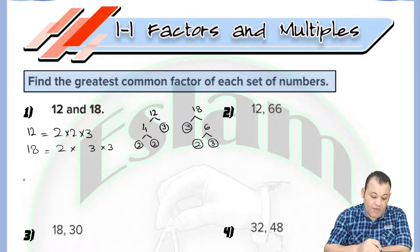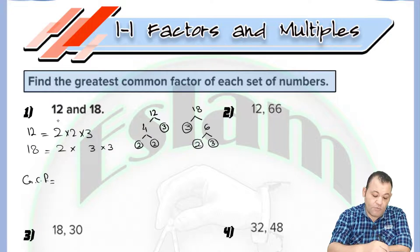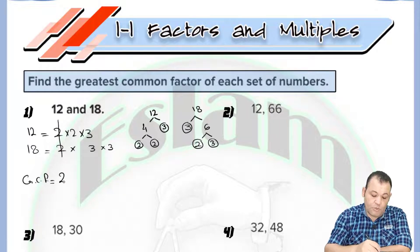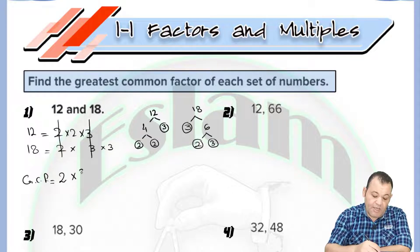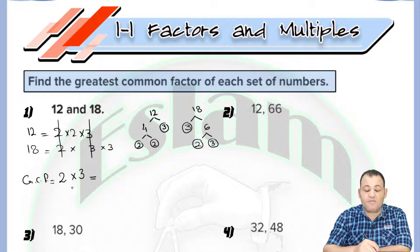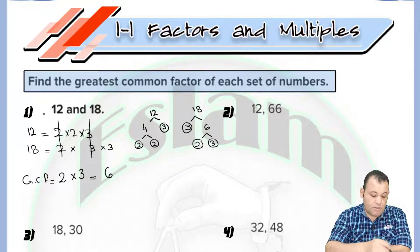Now we need to find the greatest common factor. From each column, we choose one repeated number. We have 2 and 3 both repeated, so the greatest common factor would be 2 multiplied by 3, which equals 6.